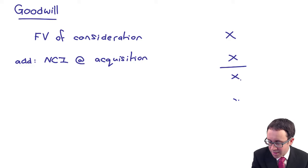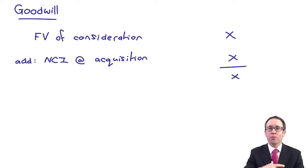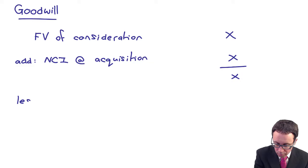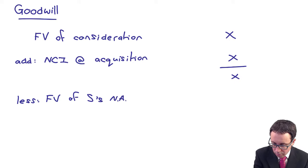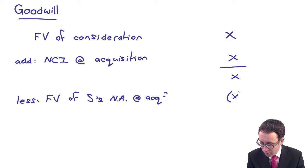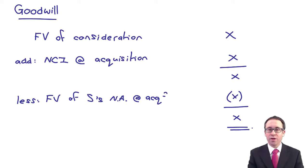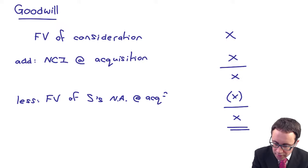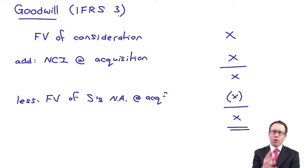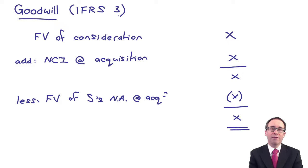Adding in the NCI at acquisition effectively gives you the entire value of the subsidiary — what we think it's worth and what the NCI think it's worth — so we're valuing the subsidiary as a whole. We then deduct the fair value of S's net assets at acquisition, and that gives you the goodwill. This is goodwill as calculated under IFRS 3 — it's such an important calculation within the business combinations standard.